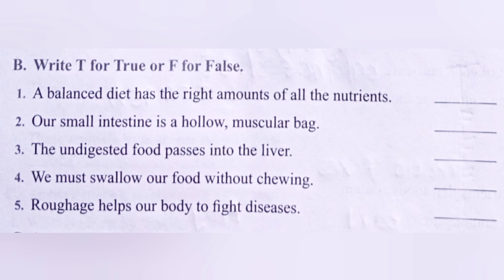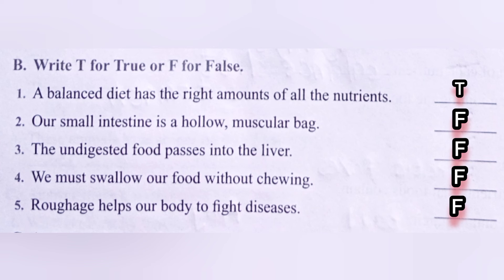Part B: Write T for true or F for false. First — a balanced diet has the right amount of all the nutrients: True. Second — our small intestine is a hollow muscular bag: False, because a hollow muscular bag is the stomach. Third — undigested food passes into the liver: False. Fourth — we must swallow our food without chewing: False. Fifth — roughage helps our body to fight diseases: False, because vitamins and minerals help our body fight diseases.